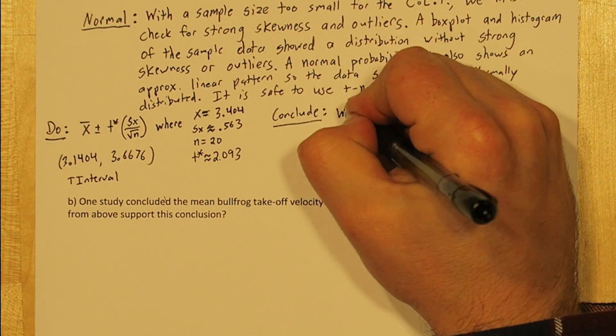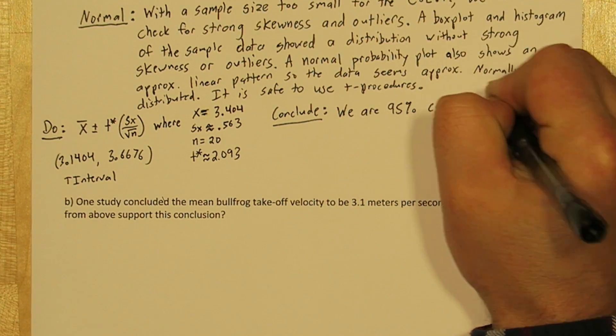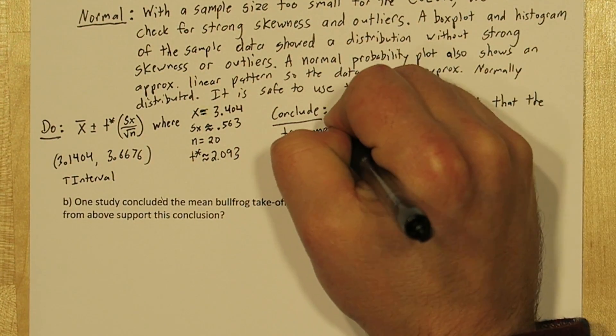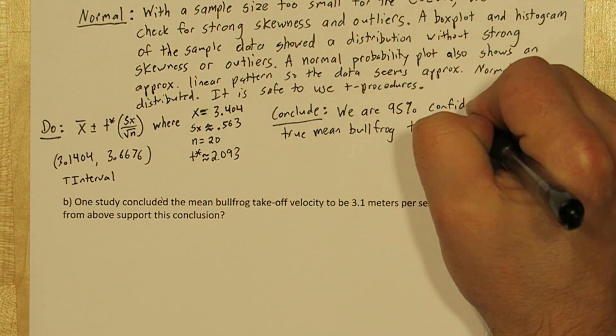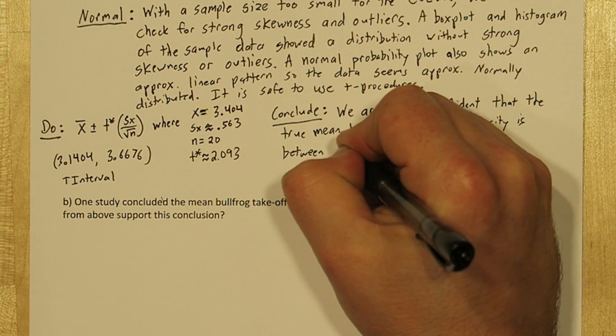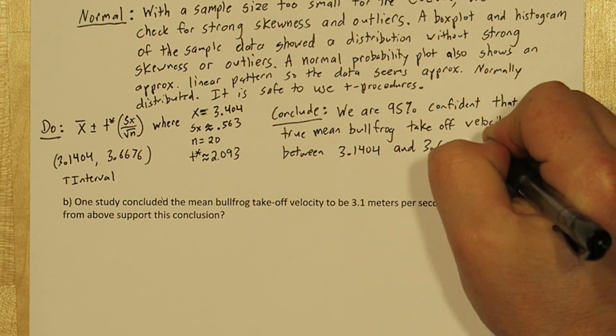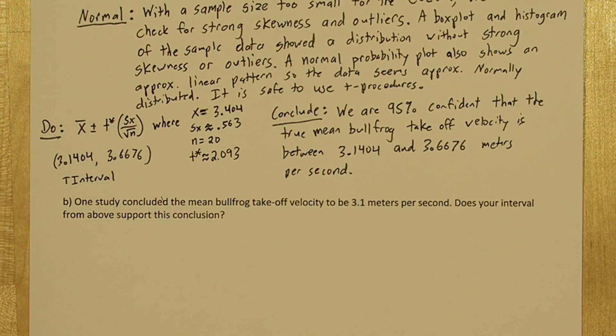Now we're ready to conclude. We are 95% confident that the true mean bullfrog takeoff velocity is between 3.1404 and 3.6676 meters per second.